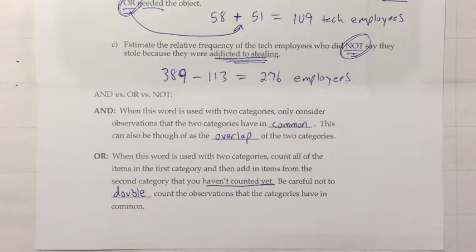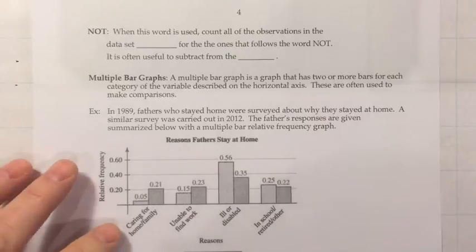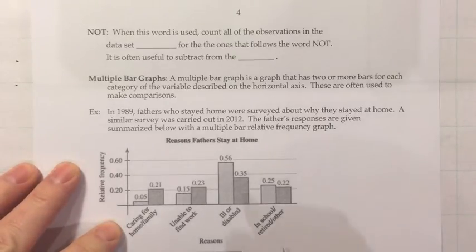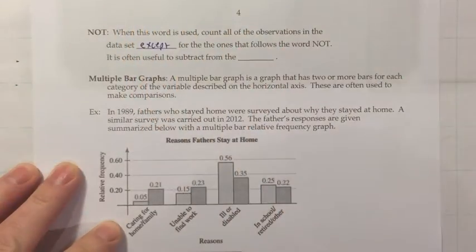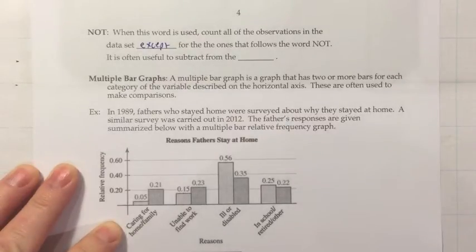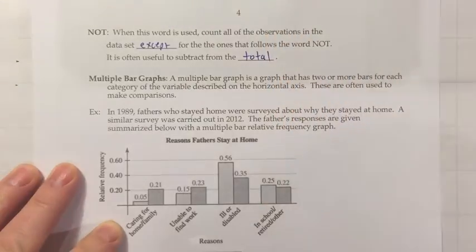And the definition for NOT: when this word is used, count all of the observations in the dataset except for those that follow the word NOT. As we saw in the previous example, it's often useful to subtract from the total when thinking about NOT-type questions.